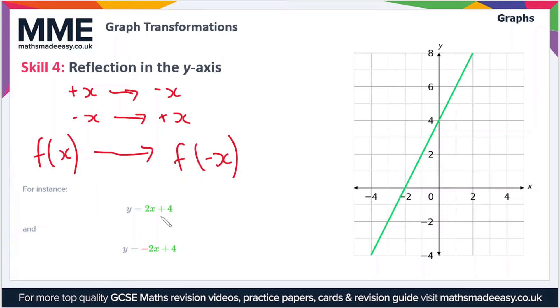The y-intercept is still going to be 4, the gradient this time is minus 2, so it should look like this. As you can see, this is being reflected in the y-axis.